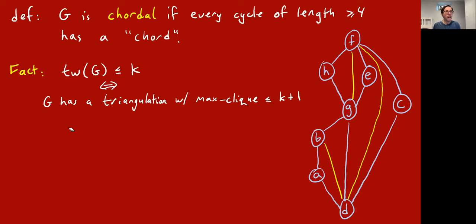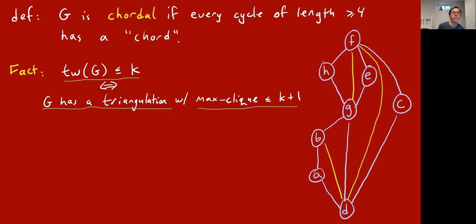A graph has tree width at most k if and only if it is possible to triangulate it so that the resulting triangulated graph has maximum clique size k plus one. On this example we knew the graph had tree width two, so it should have a triangulation where the maximum clique size is at most three. Staring at the triangulated graph, it does have cliques of size three — the triangles — but no cliques of size four.